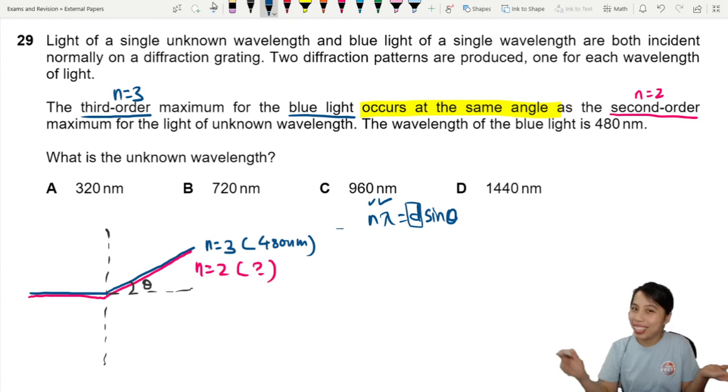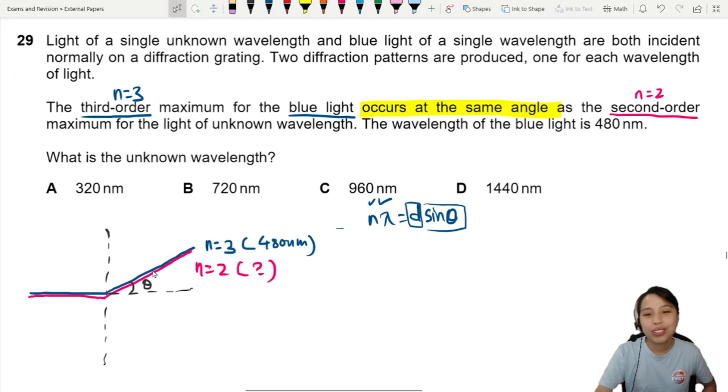We didn't change. We shine through the same grating. Then we have sin theta. Same angle, right? For both of them. So we can assume this equals to constant and do a ratio. So that way you can say that n lambda equals to the n lambda of the other one.